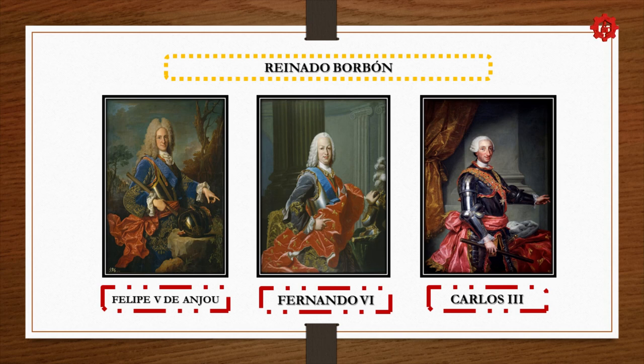This conflict was called the Guerra de Sucesión Española, which lasted approximately 12 years, beginning in 1701 and ending in 1713. Felipe V became the first Borbón of the house. You should know that Felipe V was the first Borbón to occupy the crown, but he was not the one who implemented the reforms — the famous reformas borbónicas. The one who implements the reformas borbónicas is Carlos III.